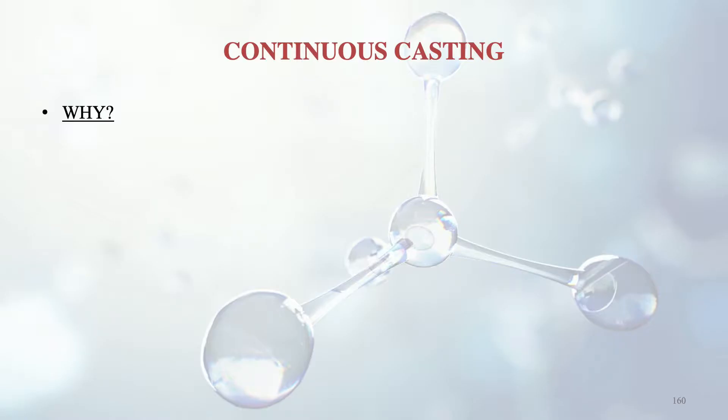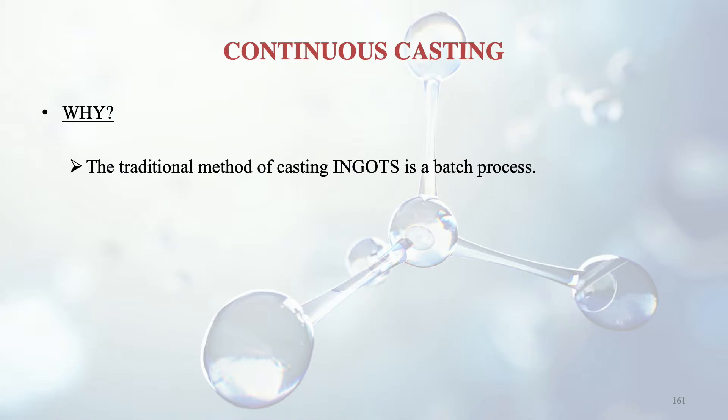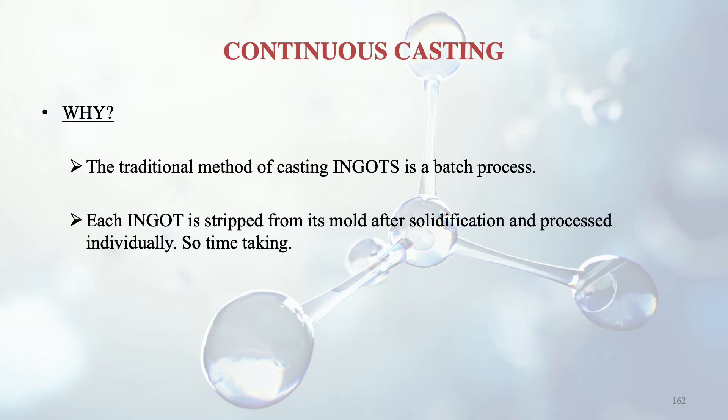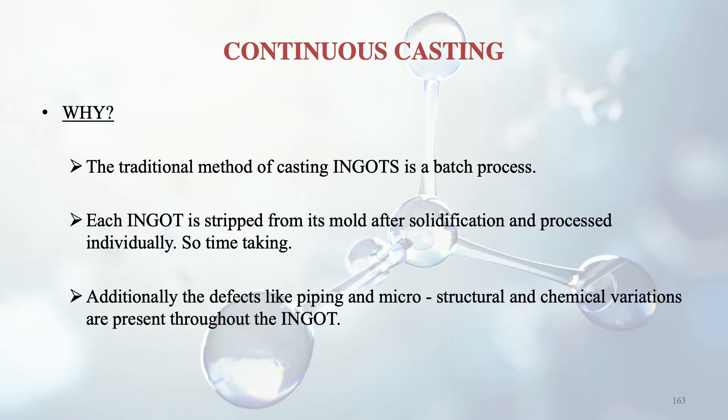Continuous casting removes the need for traditional ingot casting, which is a batch process requiring each ingot to be stripped from its mold and processed individually — a time-consuming and tedious process. Additionally, ingots have defects like piping and microstructural and chemical variations throughout. In continuous casting, the molten metal in the ladle is first cleaned and nitrogen or argon gas is blown through it for 5 to 10 minutes to equalize the temperature.